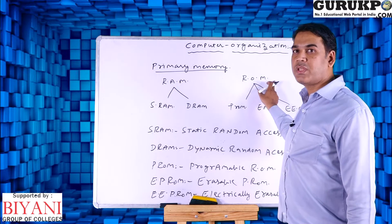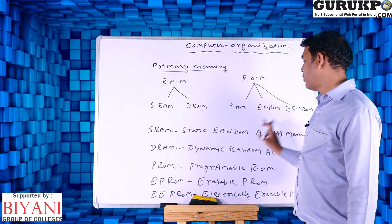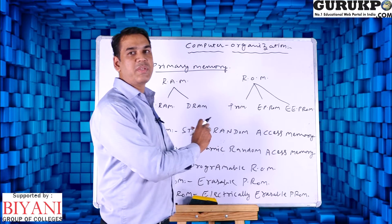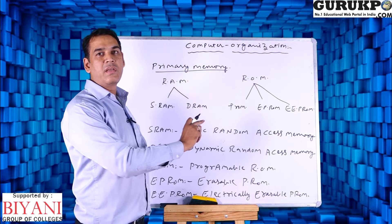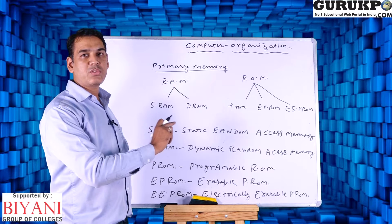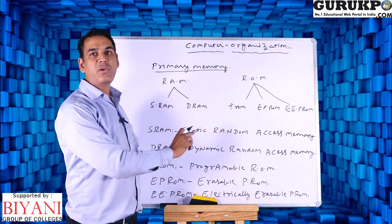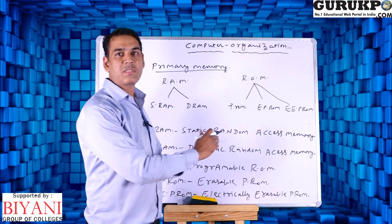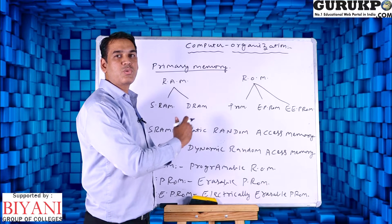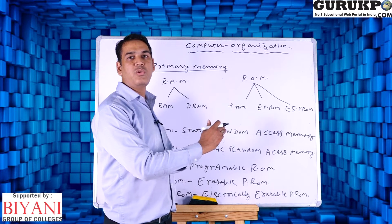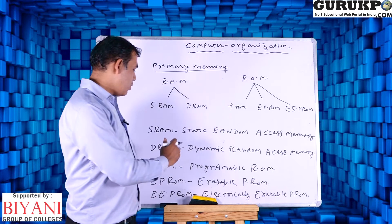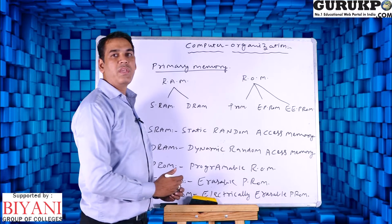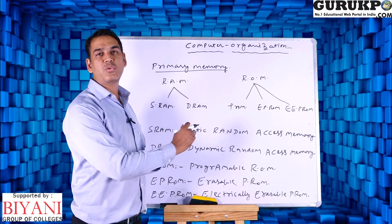ROM is divided into three parts: PROM, EPROM, and EEPROM. PROM is programmable read-only memory, meaning instructions are defined only once and cannot be erased — if a manufacturing company has already defined it, the user cannot erase it. EPROM is erasable programmable read-only memory; it uses ultraviolet rays to erase programs. EEPROM is electrically erasable programmable read-only memory, where we erase programs or instructions electrically using electrons.